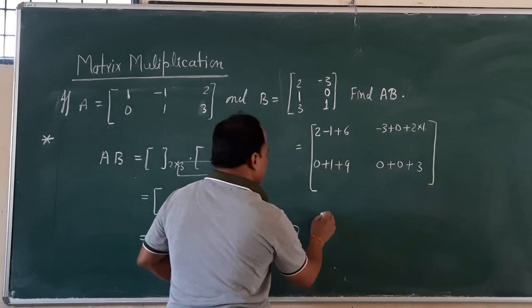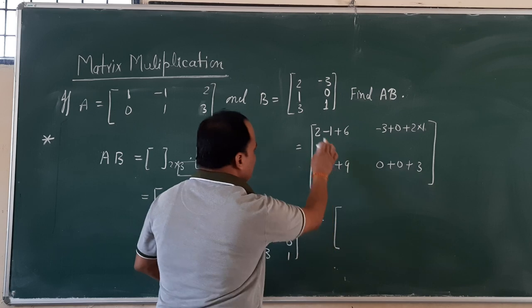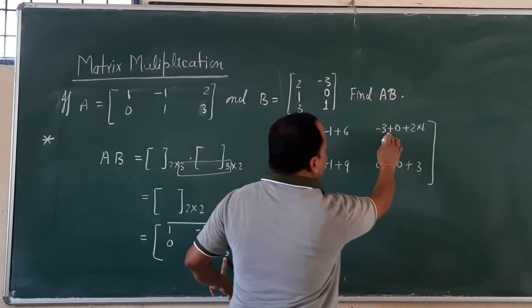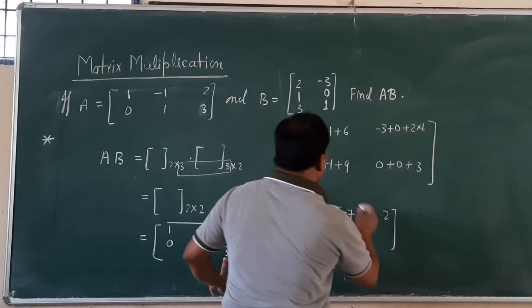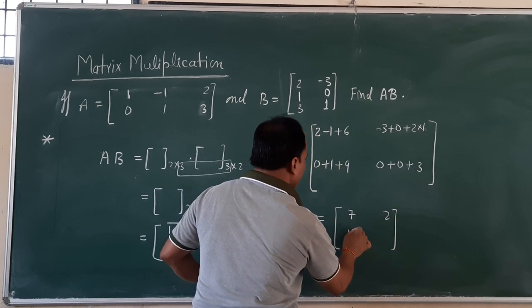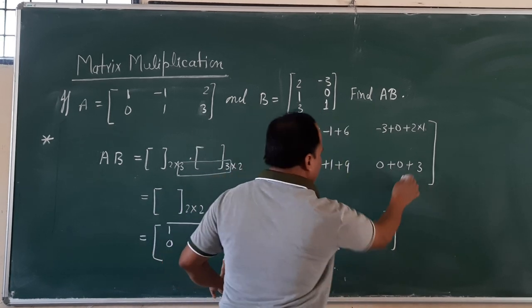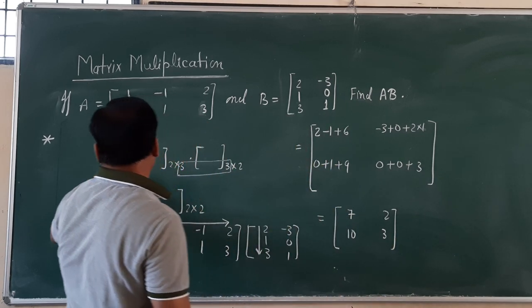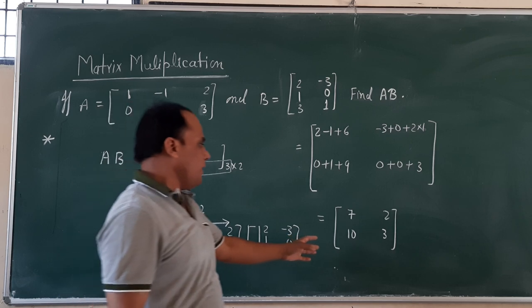In this way, now simplify it. So 2 minus 1 plus 6 equals 7. And minus 3 plus 0 plus 2 equals minus 1. Here we have 0 plus 1 plus 9 equals 10. And this one should be 0 plus 0 plus 3 equals 3. So this is the resulting product of A and B.